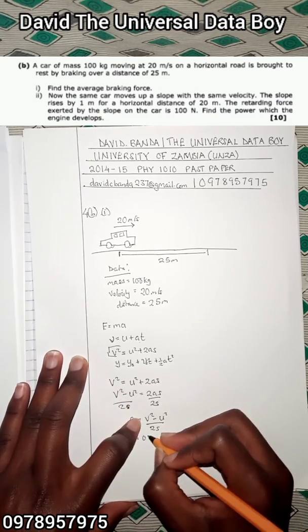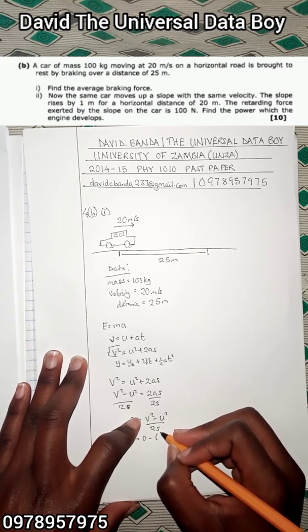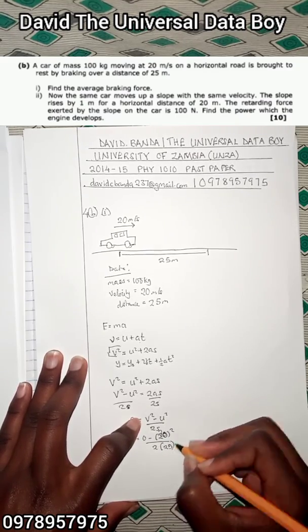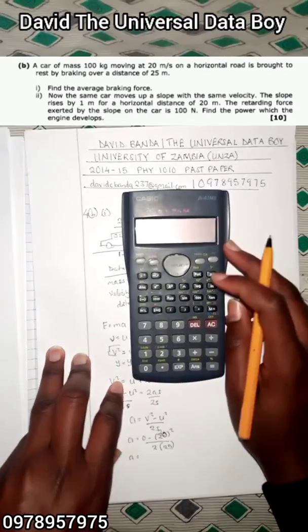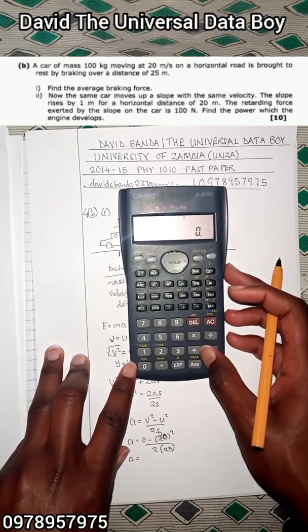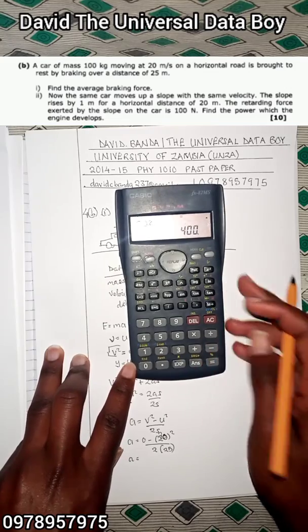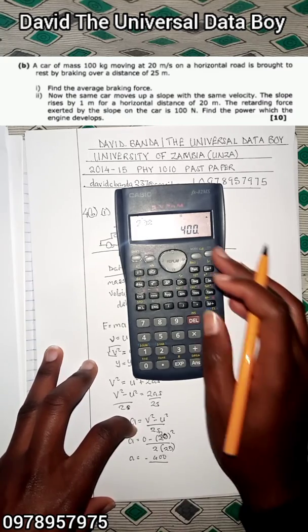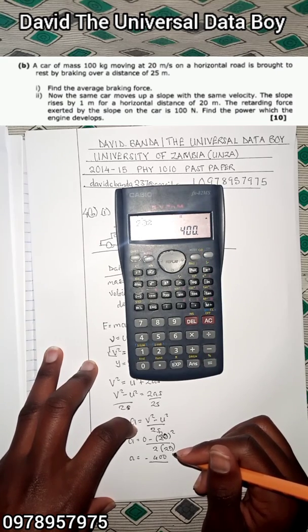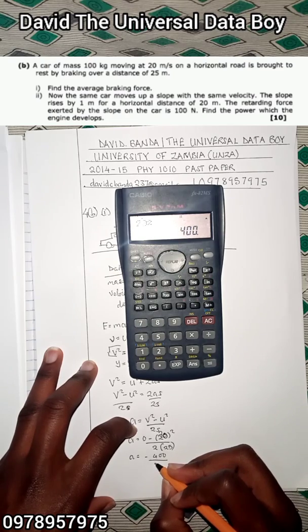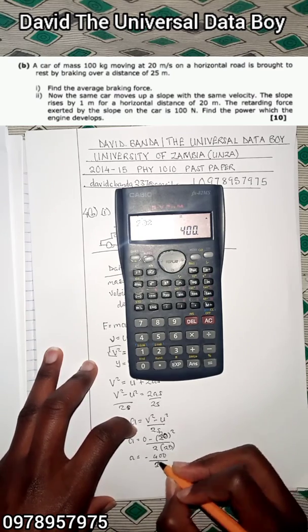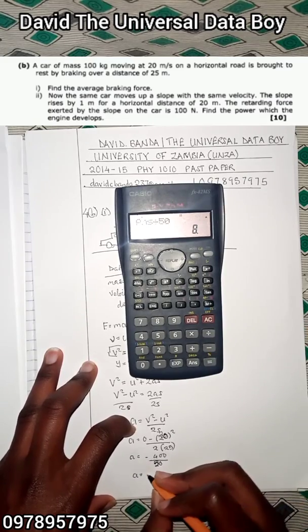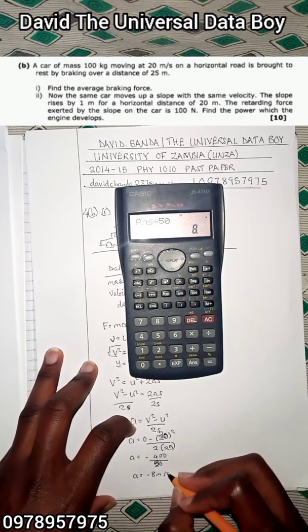Plugging in the values: the final velocity is zero, the initial velocity is 20 meters per second, and the distance is 25 meters. So we get a = (0² − 20²) / (2 × 25) = −400 / 50 = −8. Therefore, acceleration is equal to −8 meters per second squared.